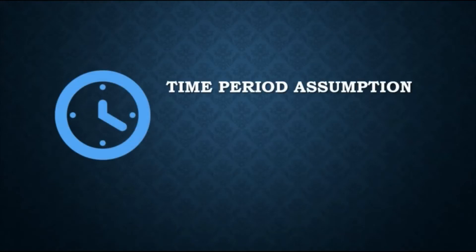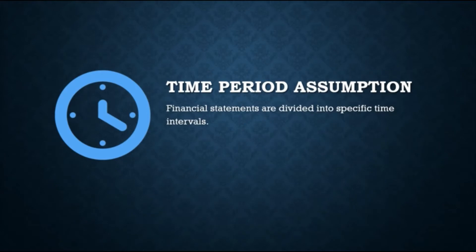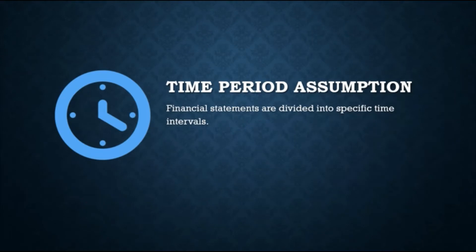First is the time period assumption, where financial statements are divided into accounting periods in preparing financial reports based on the needs of users. There would be no problem if we waited to prepare financial statements until the end of business operations. However, since that's not the case and many transactions span more than one period — for example, equipment bought 10 years ago still being used — we cannot expense all the cost immediately. Instead, we should allocate the cost over the period of use.